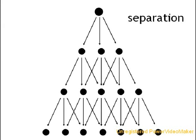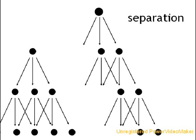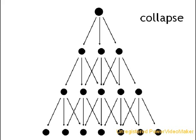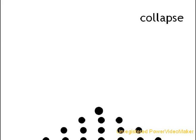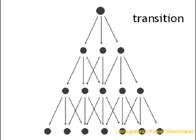With separation, part of a hierarchy splits off to form another smaller, more manageable hierarchy. With collapse, either information breakdown occurs or centralized control from the top down is lost — the system collapses. With transition, the network begins to deal with increased information and increased complexity by flattening the hierarchy.